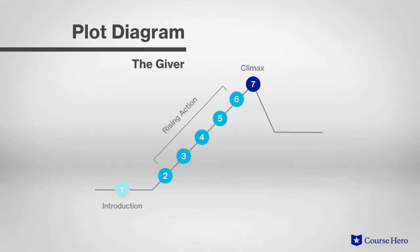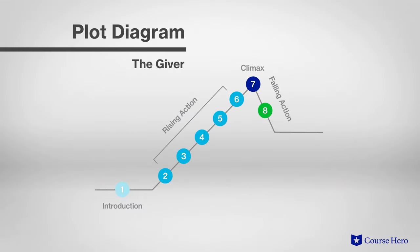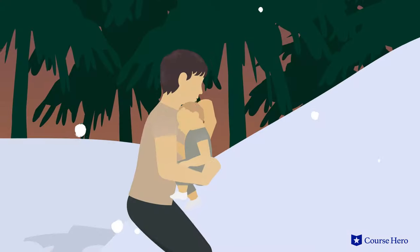Jonas learns the tragic story of The Giver's daughter, who held the position before him. And in the climax of the novel, Jonas learns that release is death and that little Gabriel would be killed. In the falling action, Jonas and The Giver concoct a plan of escape from the community, and Jonas does, taking Gabriel with him.